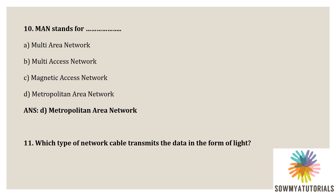Next question: which type of network cable transmits data in the form of light? Options are option A - UTP, option B - STP, option C - coaxial cable, option D - optical fiber. The correct option is optical fiber, because optical fiber consists of thin strands of glass or glass-like material which carry light from a source at one end of the fiber to a detector at the other end. So the correct option is optical fiber.